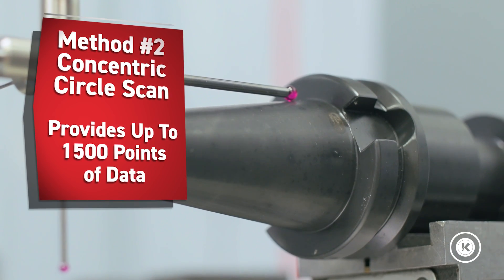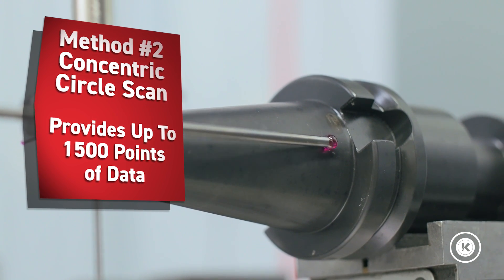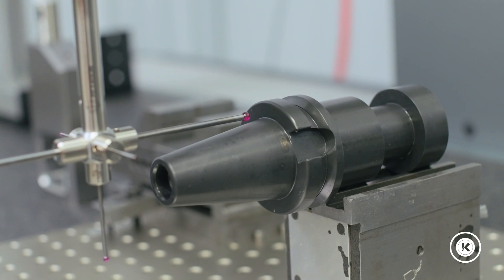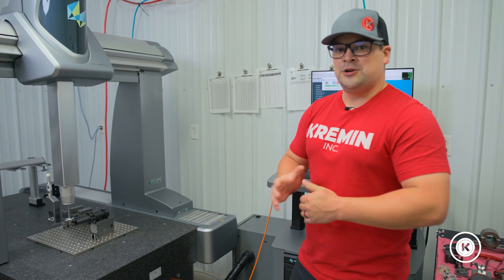The second method will be our concentric circle scan. As you can see, that stylus is touching the part, and it's going to scan around. The first method, we took eight points of information. The second method, we're taking about 1500 points.